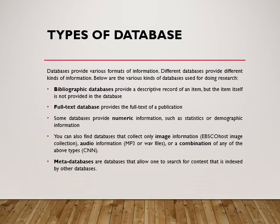Secondly, we have the full-text database, which provides the full text of a publication, as against the bibliographic database. While these two types of databases exist, several other types also exist. Examples are numeric databases that provide researchers with statistics or demographic information. A very good example of such a database in Nigeria is the type hosted by the National Bureau of Statistics. When a researcher in Nigeria is in need of any statistical information, they simply refer to the database hosted by the National Bureau of Statistics, as they provide the most verifiable statistics within the Nigerian system.